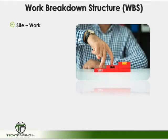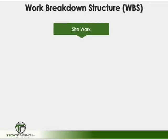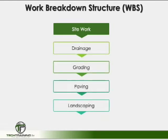The work breakdown structure describes the various components of the project schedule. In a typical building, the WBS would contain systems such as site work, structure, mechanical, electrical, plumbing, etc. A work breakdown structure begins with the major components of the tasks, and then each system is broken down into greater and greater detail. For example, site work may include drainage, grading, paving, landscaping, and so on. The WBS identifies all of the activities that need to be done within a particular task.